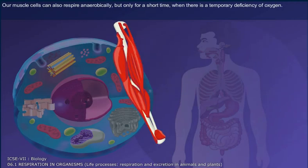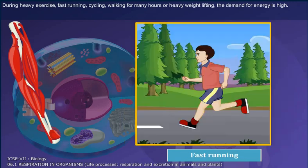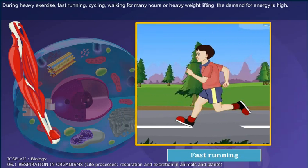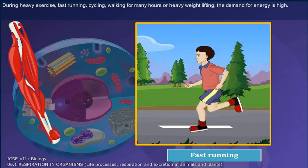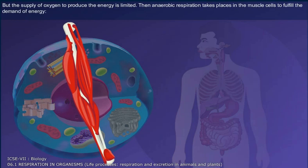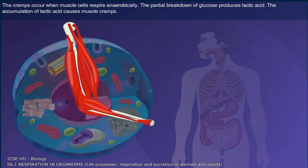Our muscle cells can also respire anaerobically, but only for a short time when there is a temporary deficiency of oxygen. During heavy exercise, fast running, cycling, walking for many hours, or heavy weight lifting, the demand for energy is high. But the supply of oxygen to produce the energy is limited. Then, anaerobic respiration takes place in the muscle cells to fulfill the demand for energy. Cramps occur when muscle cells respire anaerobically.